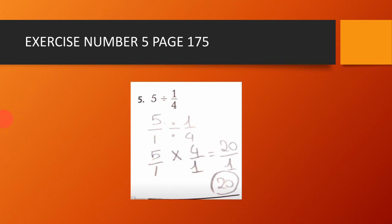Exercise number 5, page 175. We have 5 divided by 1 over 4. We write 5 as a fraction: 5 over 1 divided by 1 over 4. Using keep, change, flip: 5 times 4 equals 20, and 1 times 1 equals 1. 20 over 1 is equal to 20. So the result of 5 divided by 1 over 4 is equal to 20.